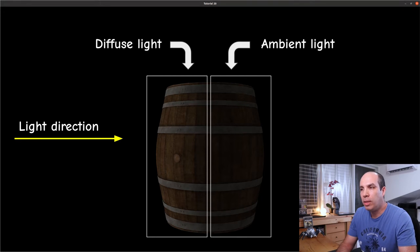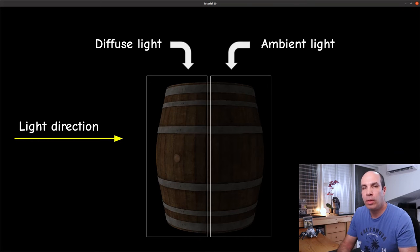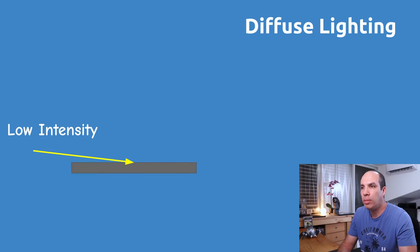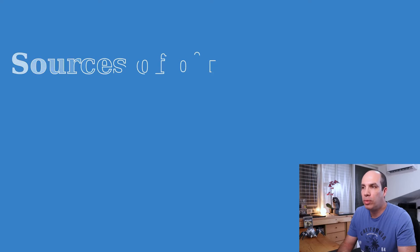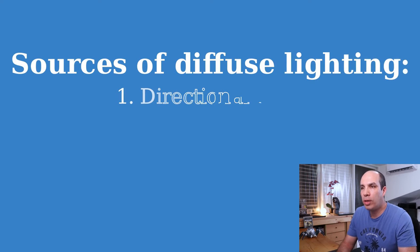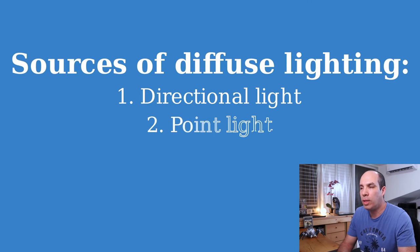The whole idea behind ambient lighting is that triangles facing away from the light will still be visible and not in total darkness, including objects not in the direct path of the light. When it comes to diffuse lighting, the intensity of the light is based on the angle at the point where the light hits the surface. In general, we have two categories of light sources relevant to diffuse lighting.